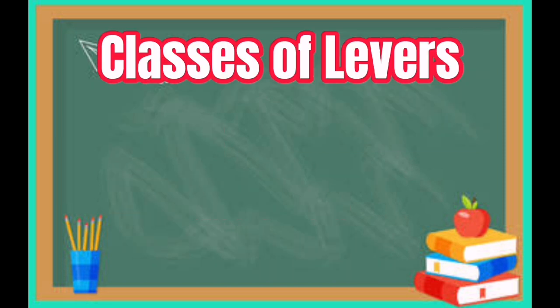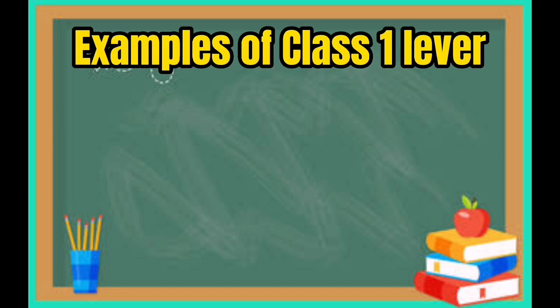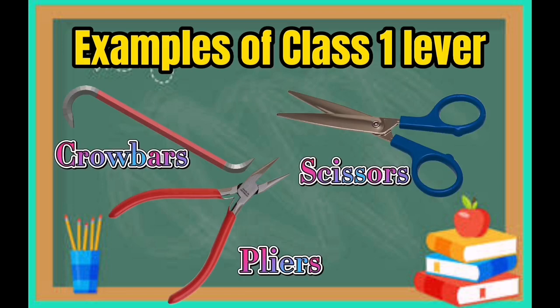Classes of Levers. The class 1 lever has its fulcrum located between the effort and the load. Examples of class 1 levers are crowbars, scissors, and pliers.